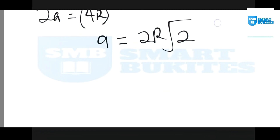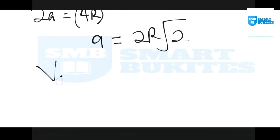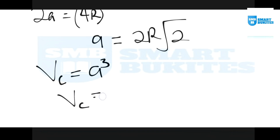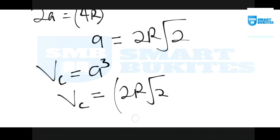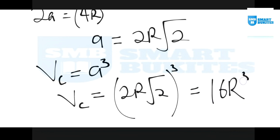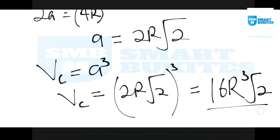The volume of a cube is a³, that is a × a × a. Since a = 2r√2, the volume of the FCC unit cell is (2r√2)³, which equals 16r³√2. So this is the volume of the FCC unit cell in terms of r.